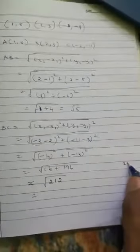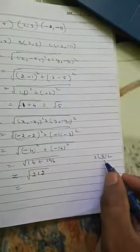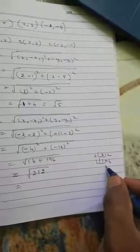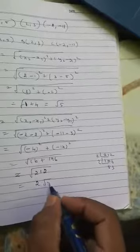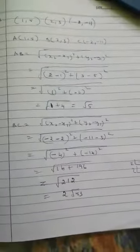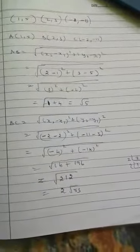So answer is 2 root 53. After that we'll take AB, BC, and next one is AC. Next one is AC.